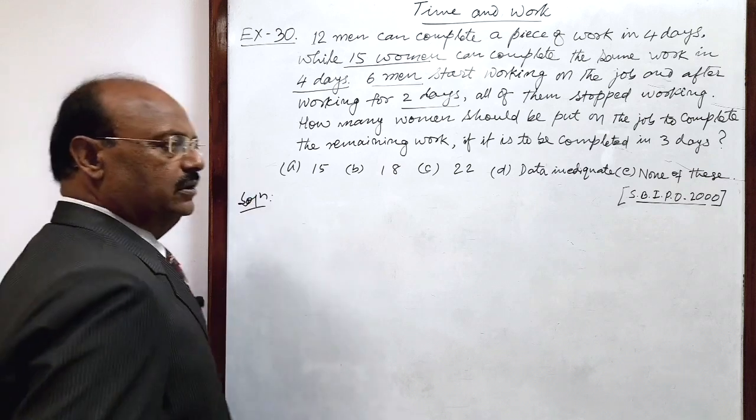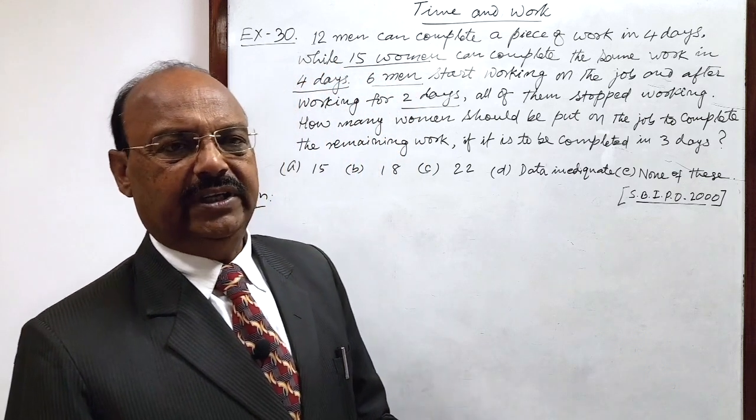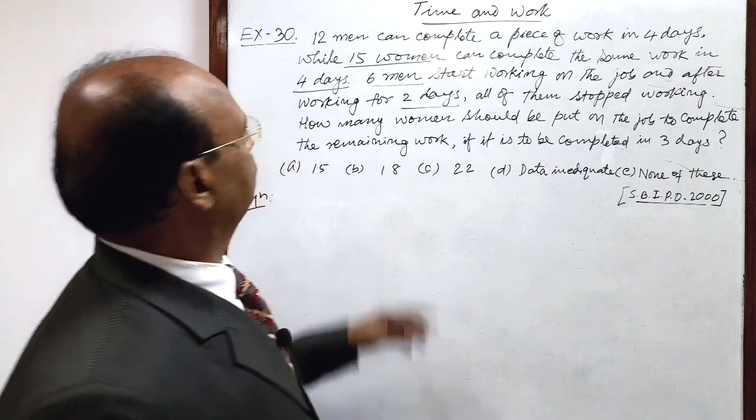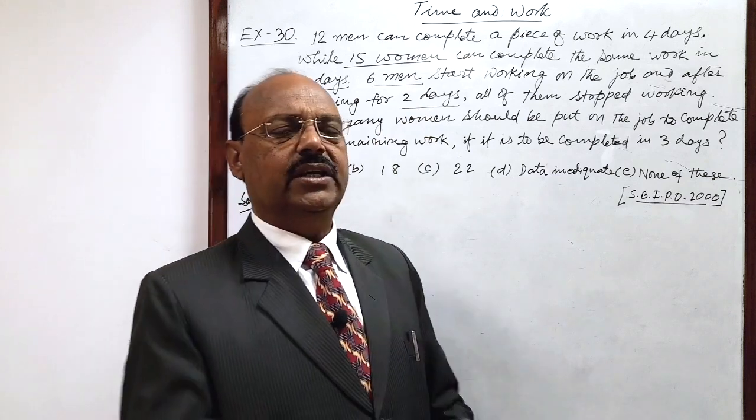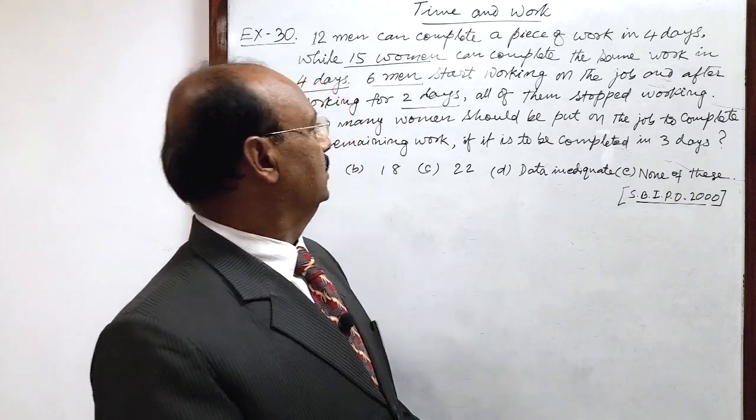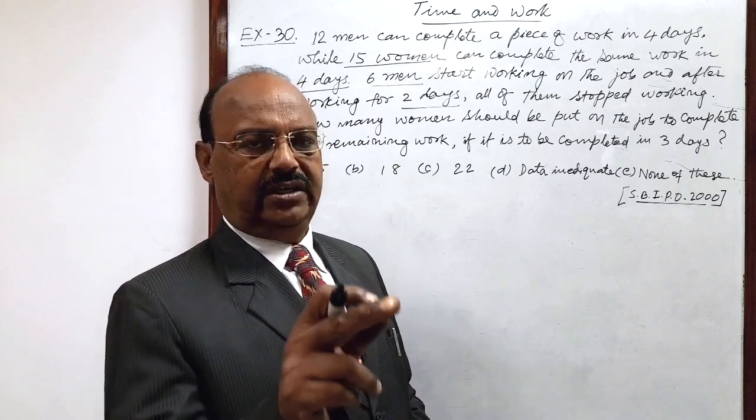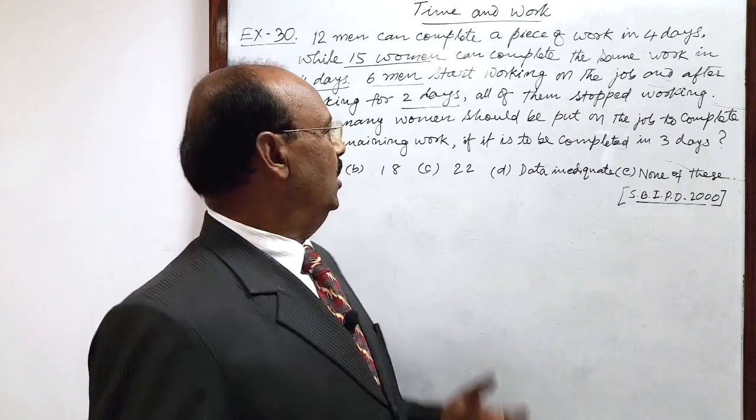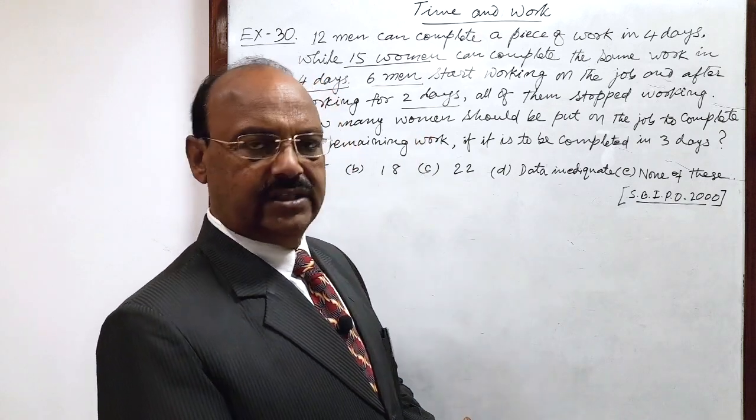First of all, we will calculate how much work has been done by 6 men in 2 days. Then, second step, we will find how much is remaining work: 1 minus work done equals remaining work. Third step, we will calculate the number of women required to complete the remaining work in 3 days.